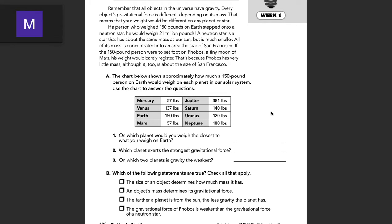On the first question, it says, on which planet would you weigh the closest to what you weigh on Earth? So on Earth, it's 150 pounds. We're looking for the next closest weight to 150 pounds. I would say that would be Saturn because Saturn is 140 pounds and that looks to be the next closest without going over 150 pounds. So I would say Saturn for number one.